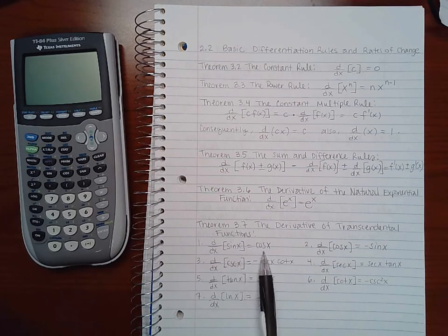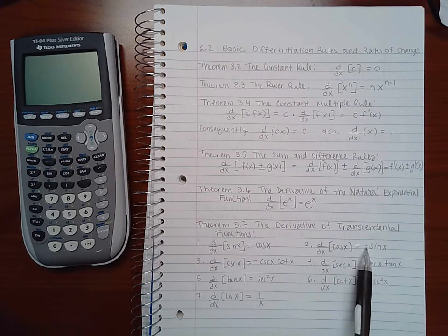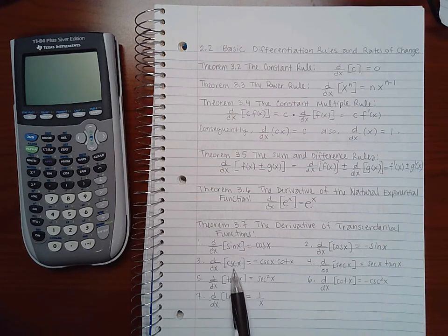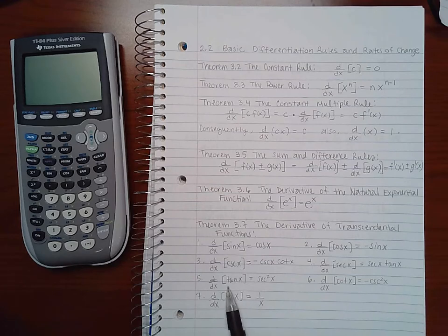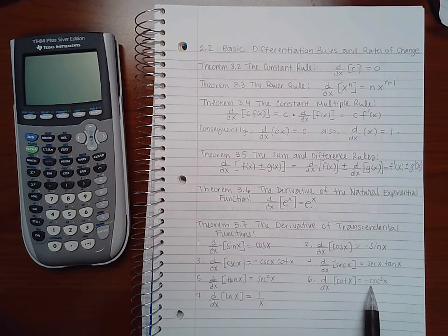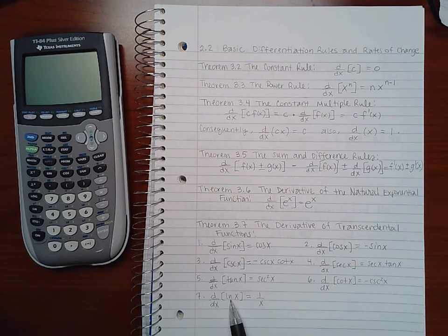So the derivative of sine is cosine. Derivative of cosine is negative sine. The derivative of cosecant is negative cosecant cotangent. Derivative of secant is secant tangent. Derivative of tangent is secant squared. Derivative of cotangent is negative cosecant squared. And the derivative of ln of x is 1 over x.